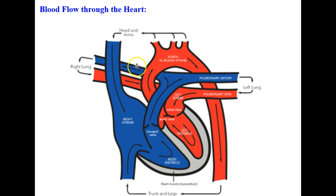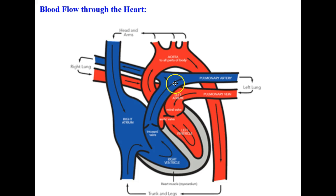Next let's take a look at the blood flow through the heart. My diagram here is color-coded — the red represents oxygenated blood flow and the blue represents deoxygenated blood flow. The heart pumps deoxygenated blood from the right ventricle through the tricuspid valve to the pulmonary arteries, which carry the deoxygenated blood to the lungs.